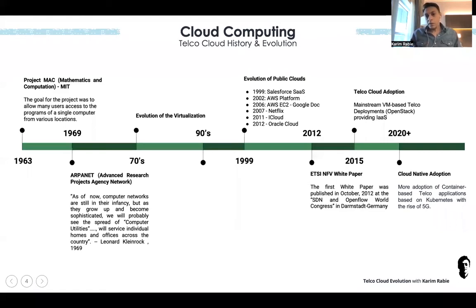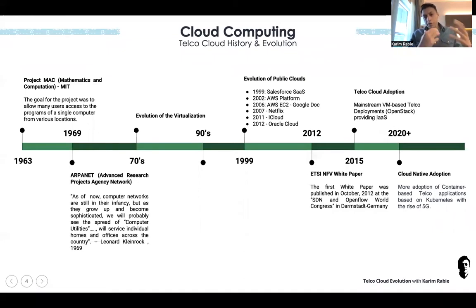Even VMware themselves provided a flavor of OpenStack called VIO. So we saw the rise of using OpenStack in Telco clouds. By that time, Telco cloud was only providing infrastructure as a service — we will explain that.